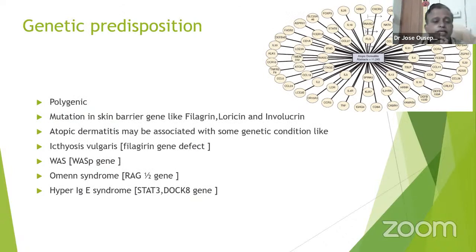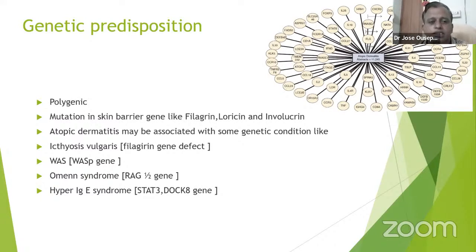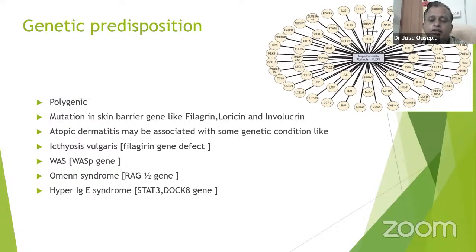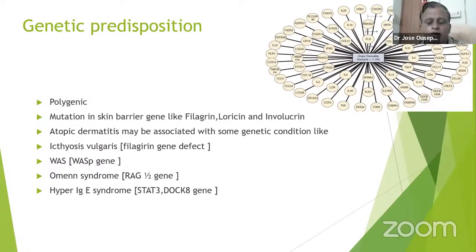Regarding genetic predisposition, there are multiple genetic factors involved. In Atopic Dermatitis, there is a polygenic theory. The key genetic predisposition is the mutation of skin barrier genes like filaggrin, loricrin, or involucrin. Atopic Dermatitis may sometimes be associated with other genetic conditions like ichthyosis vulgaris, where filaggrin gene defects are a major factor.